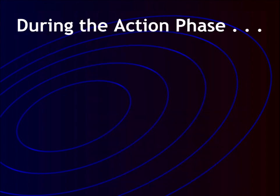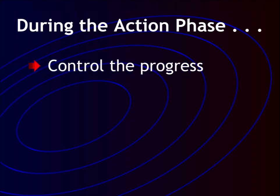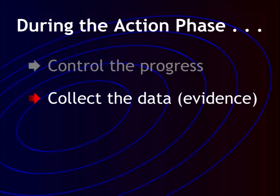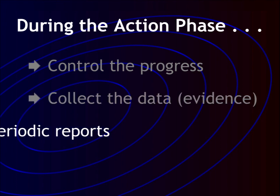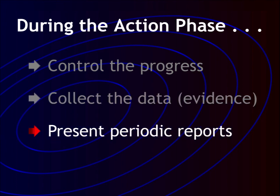There are three things you want to make sure you do during the action phase. First, control the progress — keep track of progress. Are you seeing improvements or are things getting worse? Second, collect data. If your problem involves a health issue, you may want to track things like mood level, blood pressure, heart rate, and things like that. Third, create periodic reports, even if it means reporting to yourself.